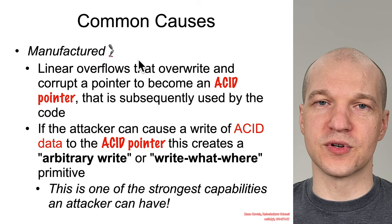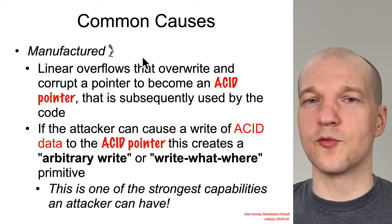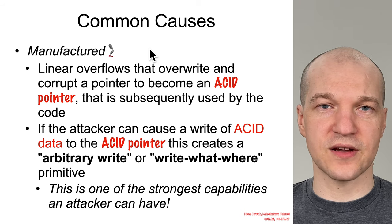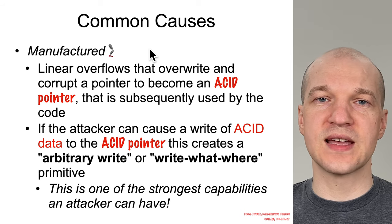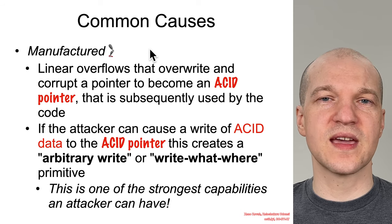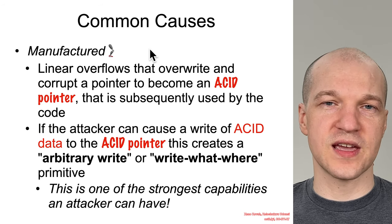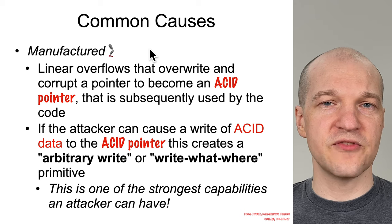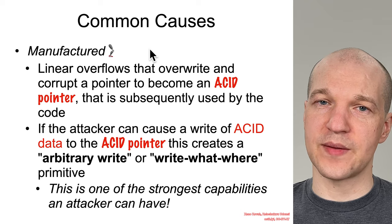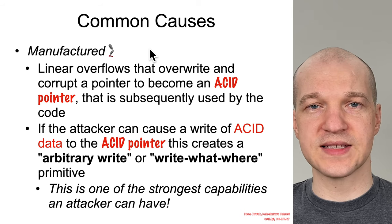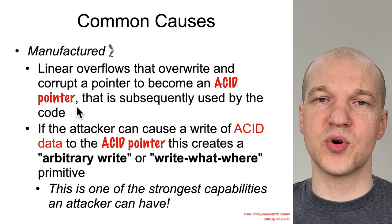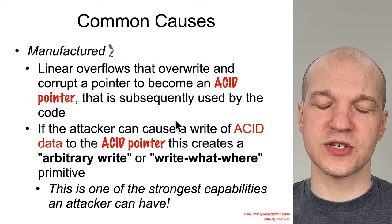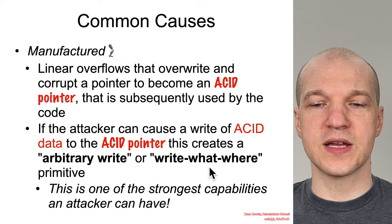Manufactured out-of-bound write vulnerabilities are cases where the attacker utilizes something like a linear buffer overflow — such as a stack overflow or heap overflow — and what they corrupt is maybe not directly the return address on the stack. Maybe there's a stack canary and they have a pure linear overflow. So instead they corrupt an adjacent local variable that happens to be a pointer, and if they can subsequently cause attacker-controlled data to be written to that now-overwritten attacker-controlled pointer, then that constitutes an out-of-bound write vulnerability, which we call an arbitrary write, or a write-what-where primitive.